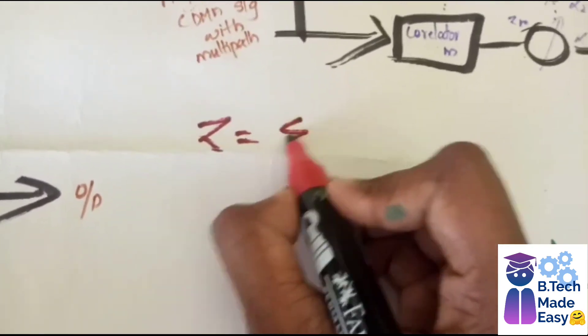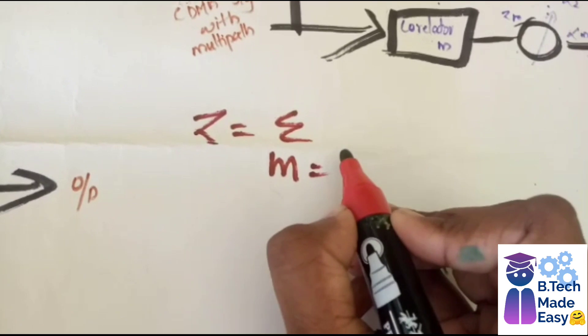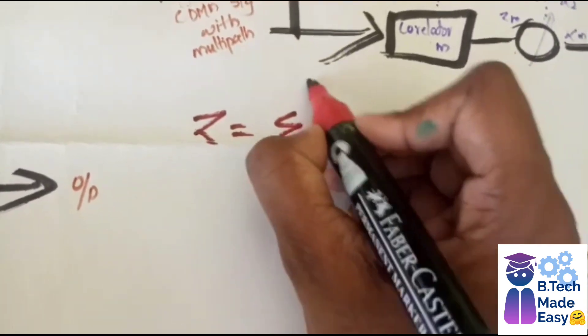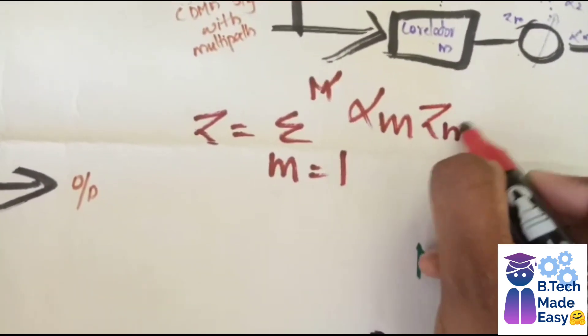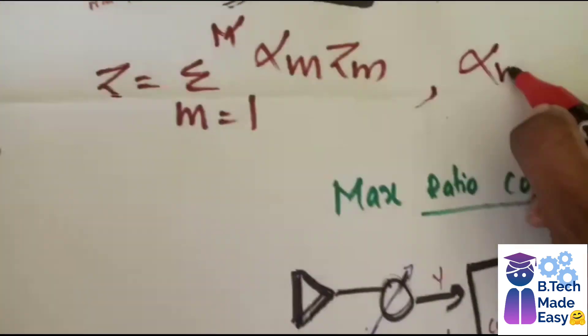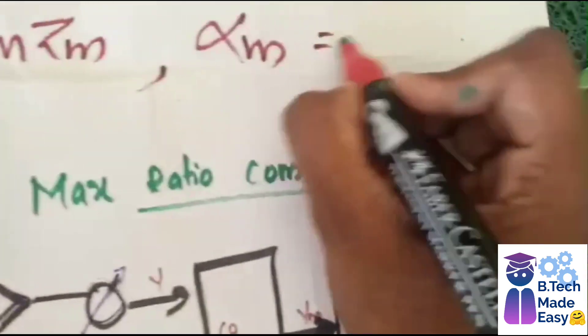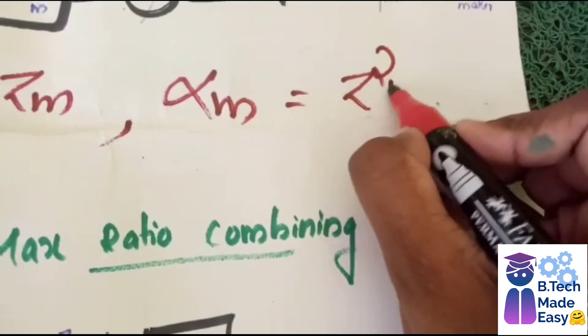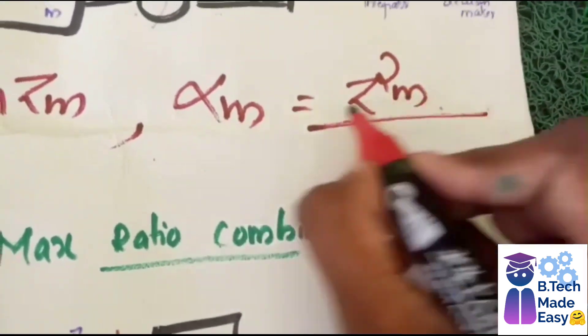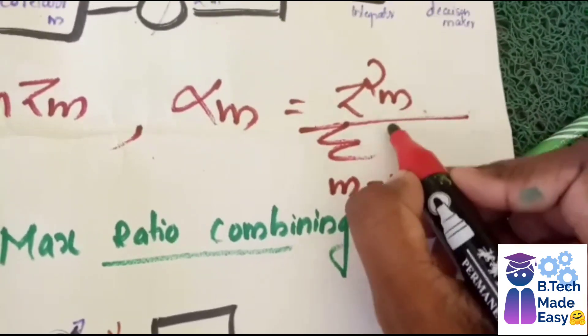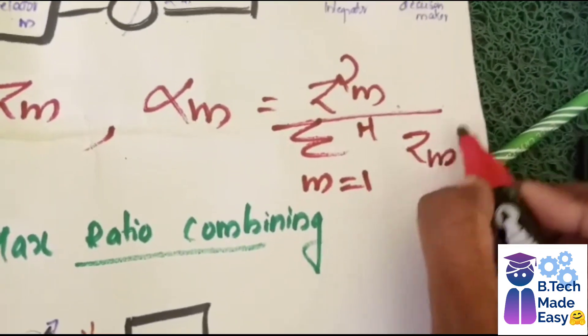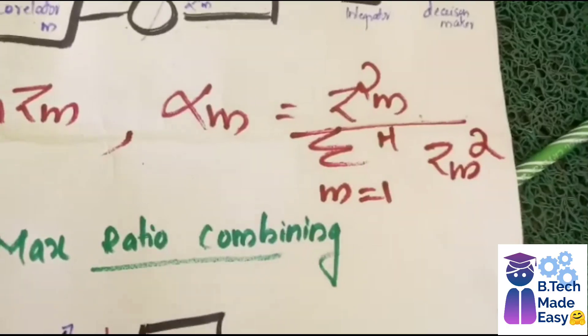The total output is expressed as: the total output equals sigma (m = 1 to M) of alpha_m times z_m, where alpha_m equals z_m squared divided by sigma (m = 1 to M) of z_m, the whole squared.